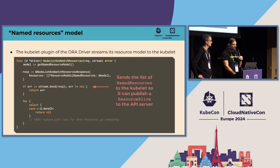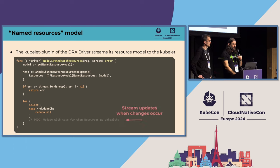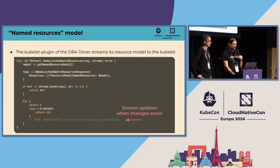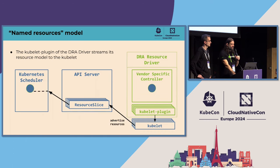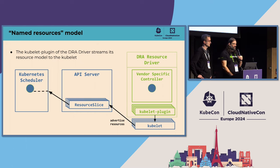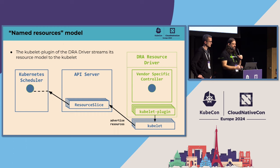If you send this once when the node starts up, and then if something goes wrong — like a resource goes unhealthy — you can send an update of the stream. Going back to the picture, the Kubelet plugin of the DRA driver satisfies this part: the DRA resource driver's Kubelet plugin advertises its resources through the streaming API to the Kubelet. The Kubelet uses that to write a resource slice into the API server, and now the scheduler has the ability to look at this information when making scheduling decisions for your pod.